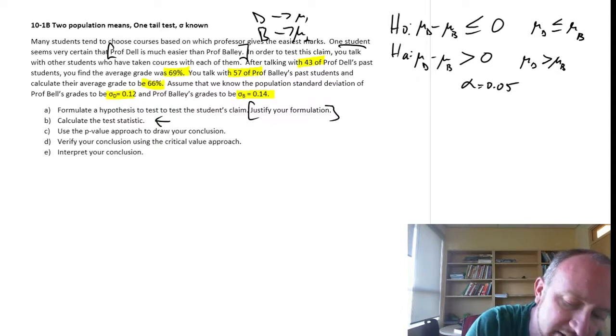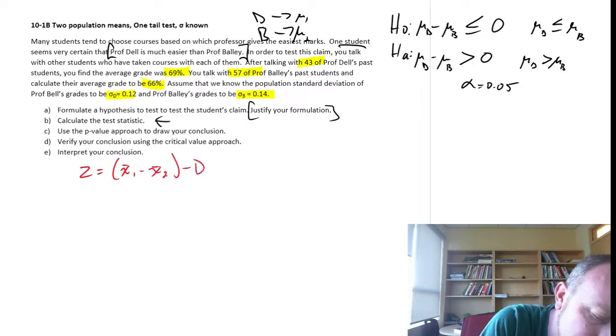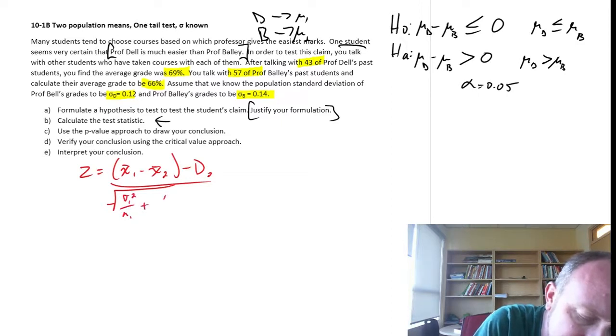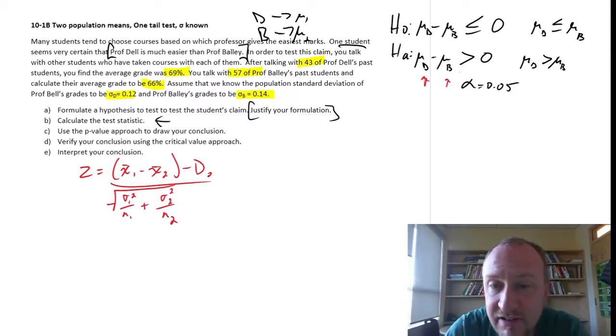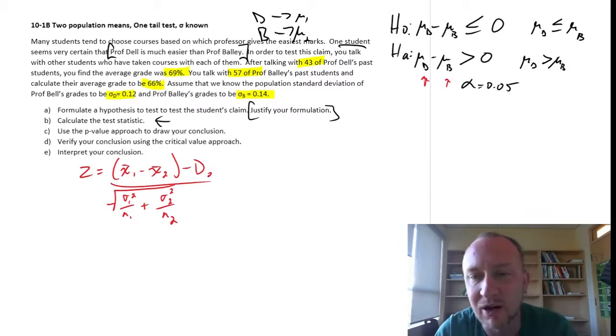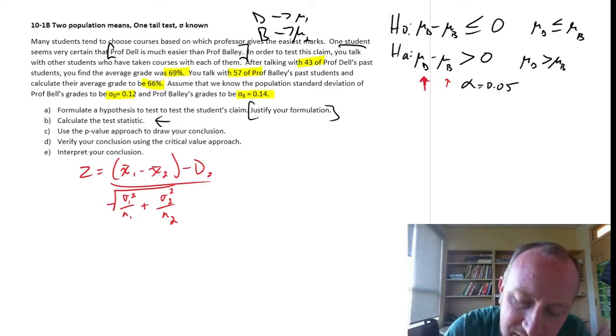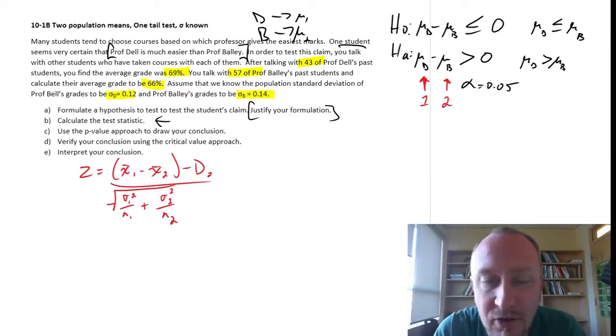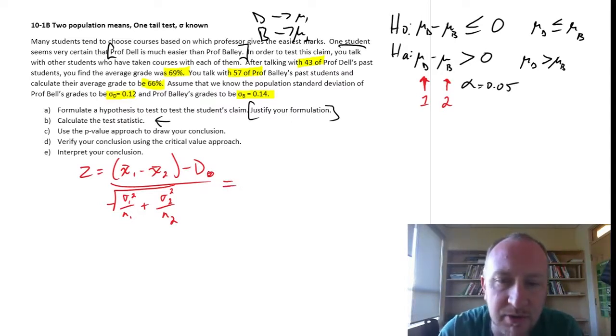However, if the test supports the alternative hypothesis, if I can reject the null and support the alternative, then that provides some statistical backing to what this student is claiming to be true. I guess the data does support this claim if the alternative comes out to be true. So, calculate our test statistic next step. Let's pull out our formula. z equals x bar 1 minus x bar 2 divided by the standard error.